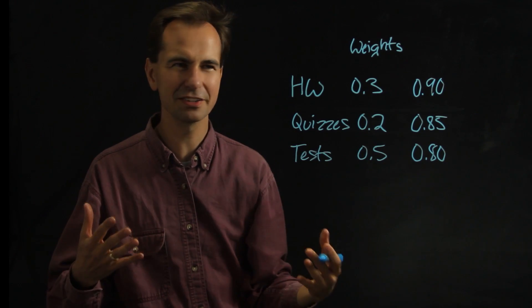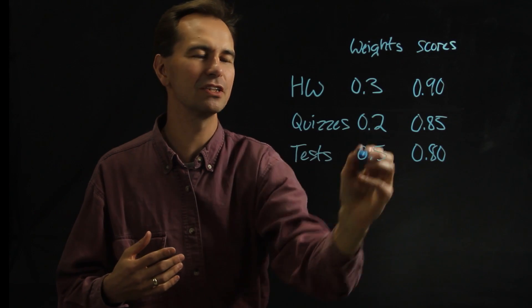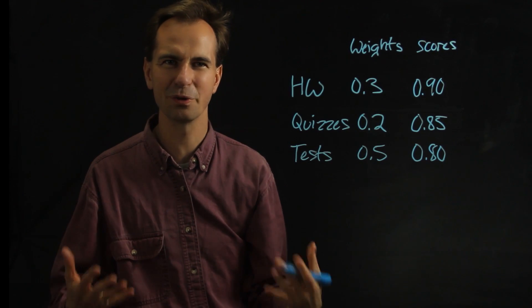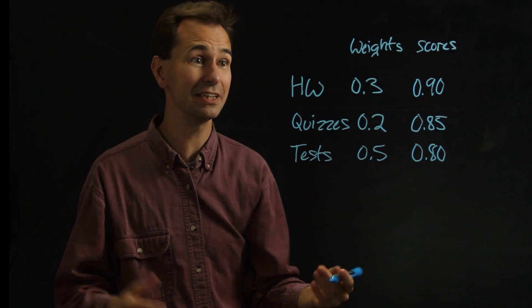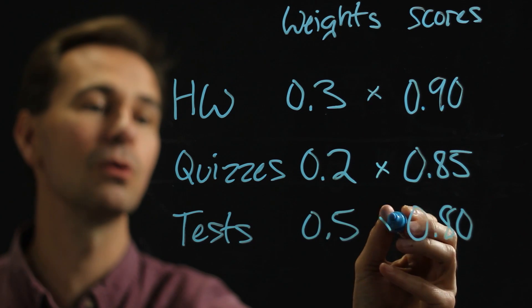So you've got all this stuff. Here are your scores, here are the weights for those scores. How do you figure out what your grade is going to be for your class? Well, it turns out it's pretty easy. All you have to do is multiply the weights by the scores.